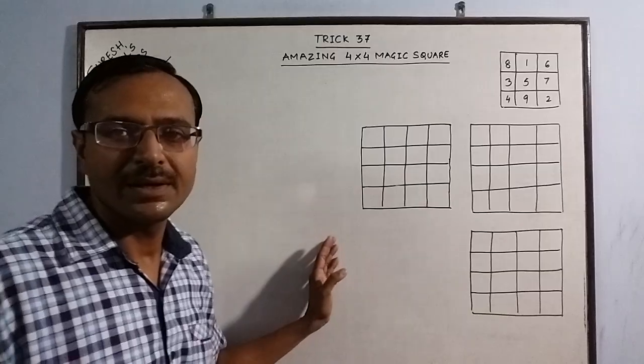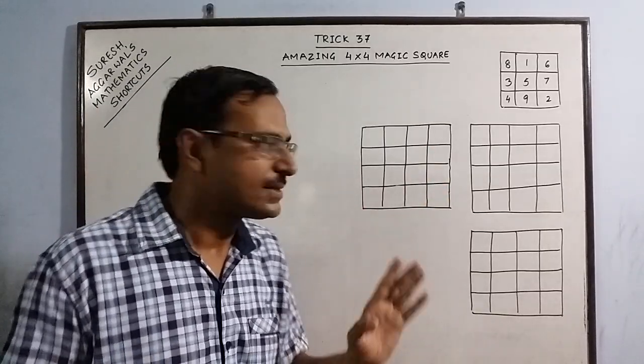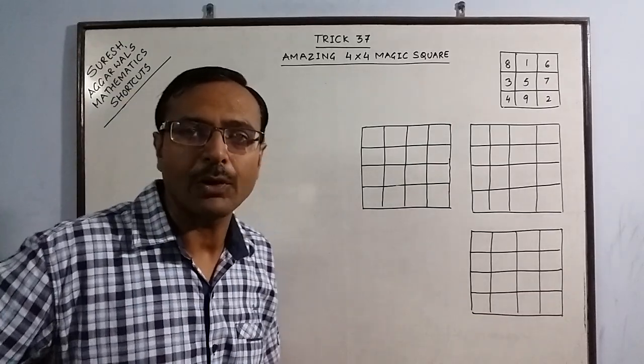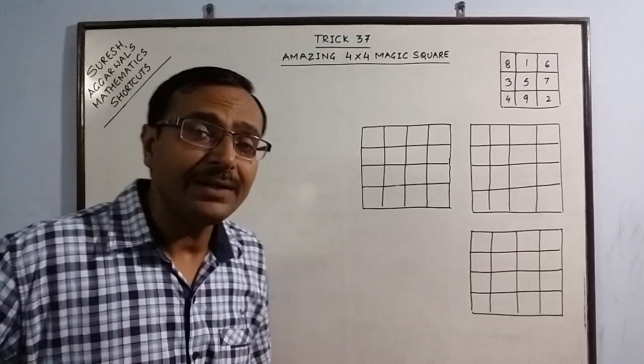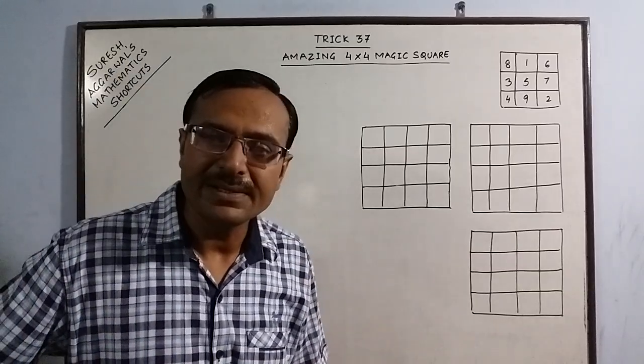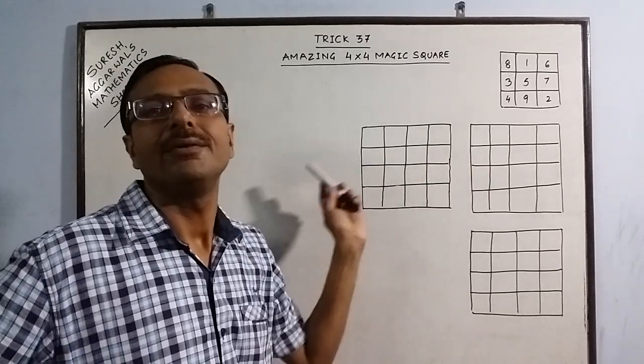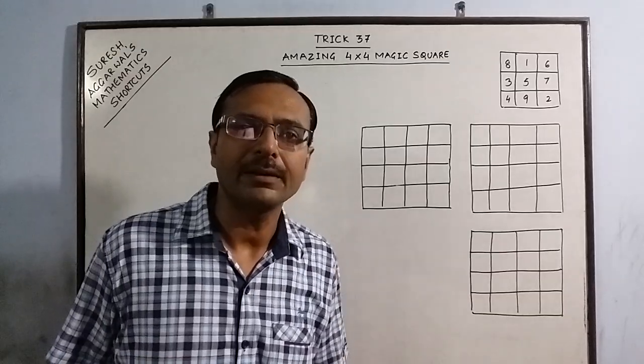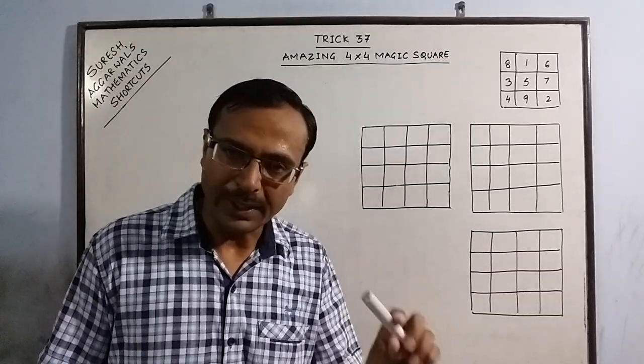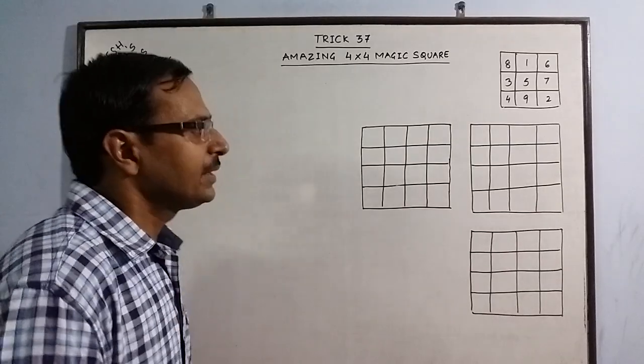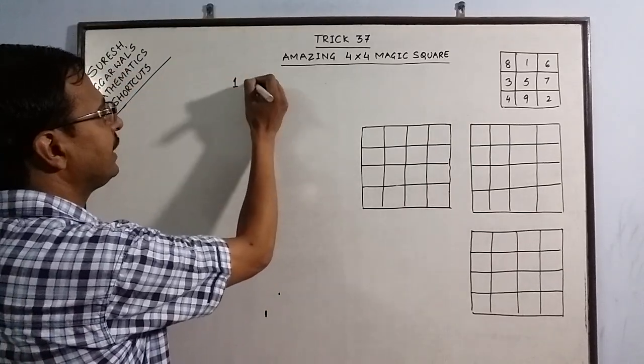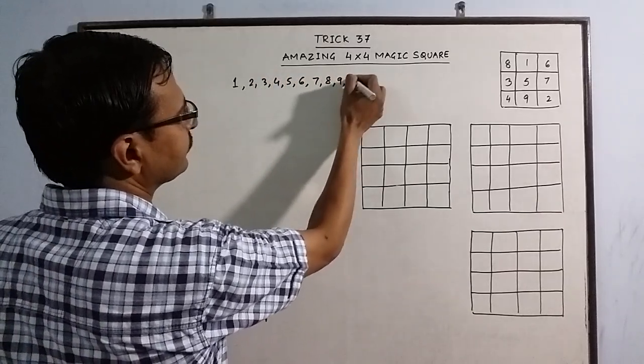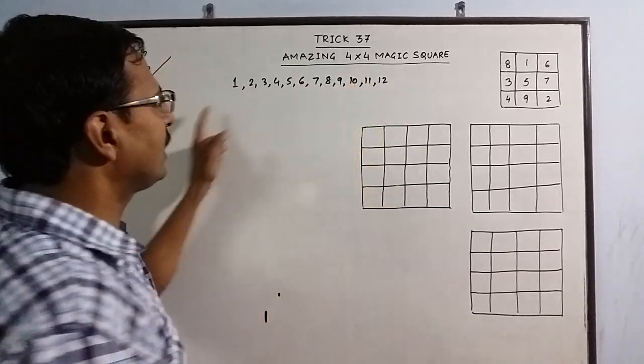Now, this 4 by 4 square has 16 cells, 16 squares. So, I will be using 12 of them for writing numbers from 1 to 12. And the remaining 4 numbers depends on what total we want from each row and from each column. To make the things more clear, I will just demonstrate to you one such magic square. See, first of all, I have to write numbers from 1 to 12. So, these are the numbers from 1 to 12.